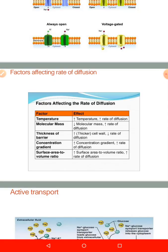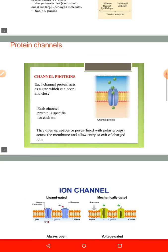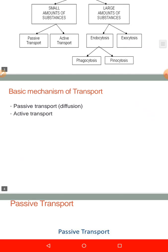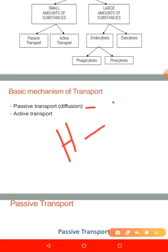That is all about passive transport. Passive transport is diffusion of substances from a region of high concentration to a region of low concentration. There is simple diffusion, facilitated diffusion, and special types of diffusion such as filtration, bulk flow, and osmosis — all falling under passive transport.